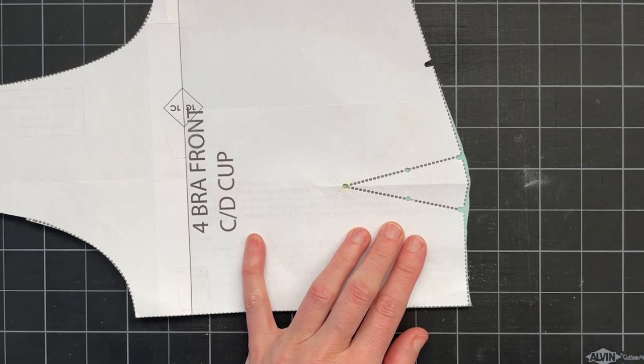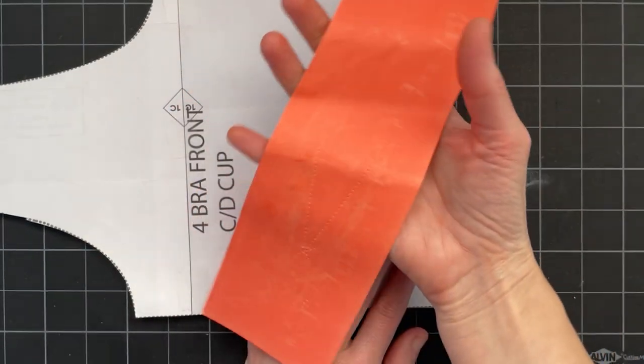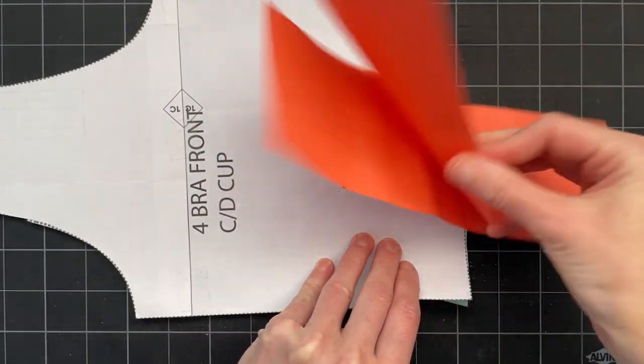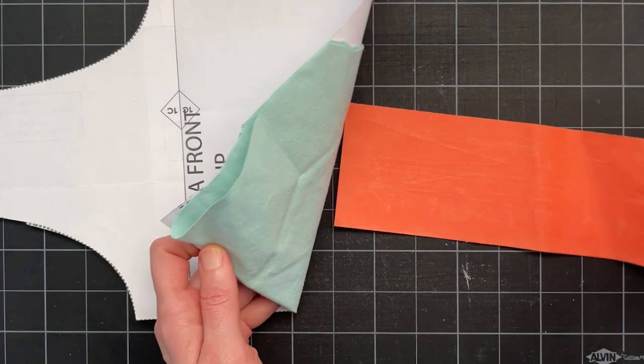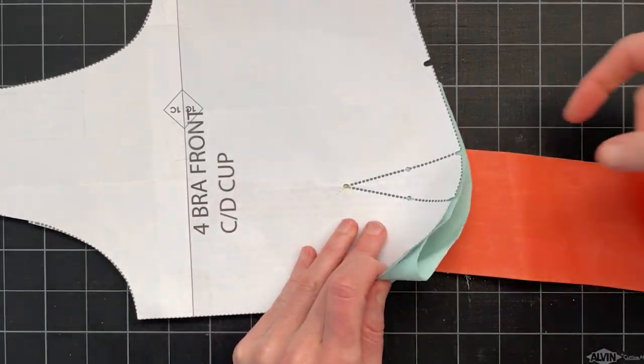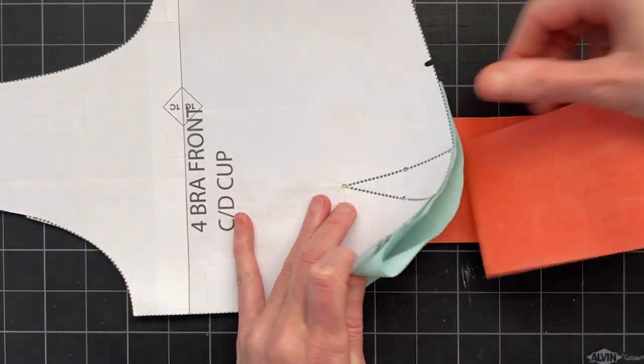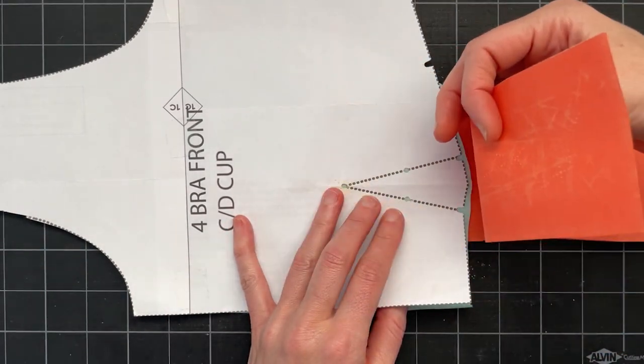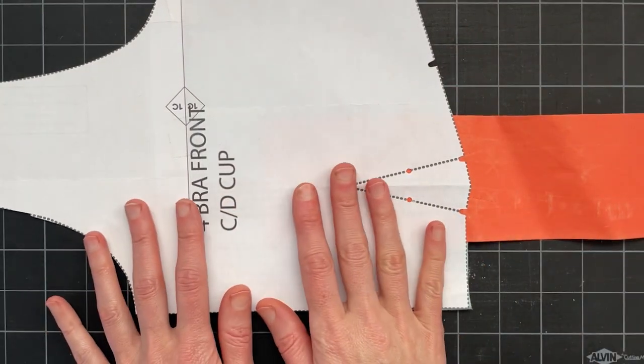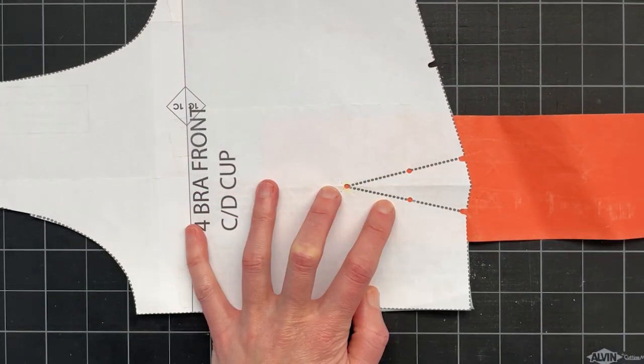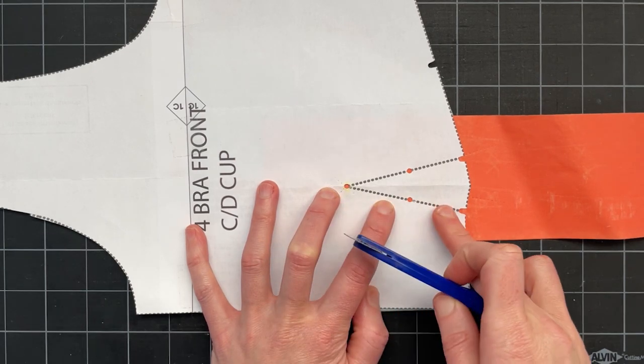Then when you're ready to mark your dart you're going to grab your transfer paper and you want to sandwich your fabric with the transfer paper. You put one side of the transfer paper under the fabric under that dart, and then this top piece of the transfer paper goes on top. Then you put your pattern back on top and we can use our tracing wheel to trace the dart.